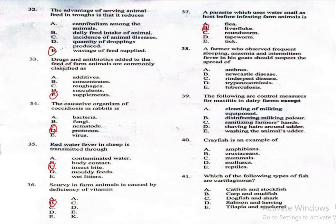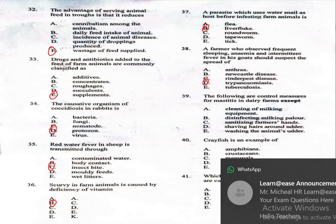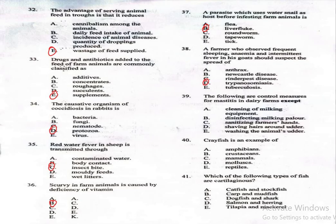Question 38: A farmer who observed frequent sleeping, anaemia, and intermittent fever in his goats should suspect the spread of what? The correct answer is option D, which is trypanosomiasis. These symptoms are classic signs of trypanosomiasis, which is a disease spread by tsetse flies.